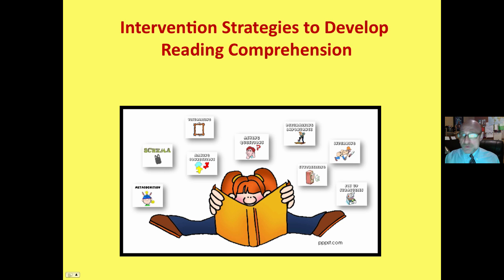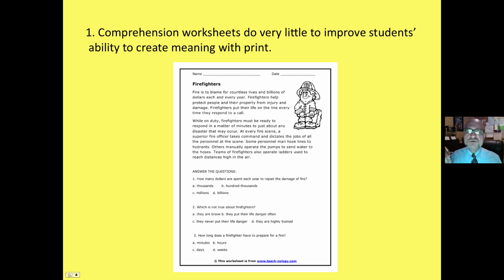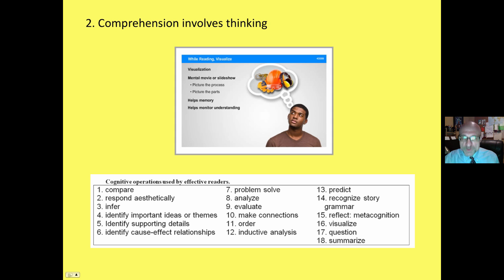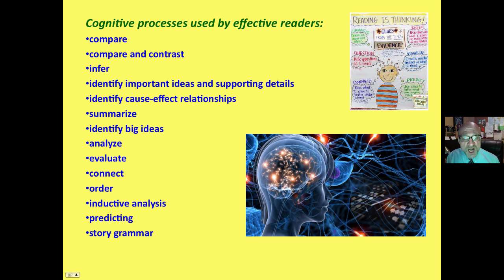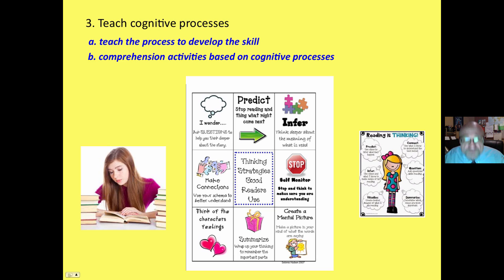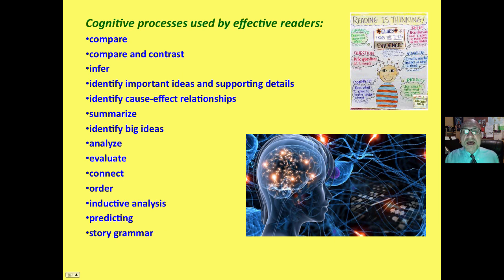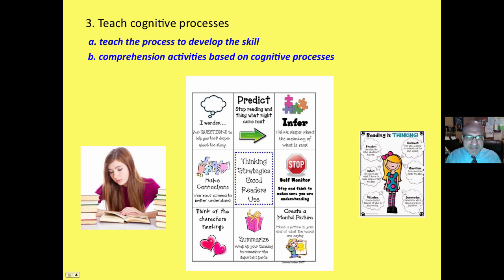Here are some examples of intervention strategies to develop reading comprehension. Know that comprehension worksheets do very little to improve students' ability to create meaning with print. Comprehension involves thinking — these are all cognitive processes used by effective readers. To improve comprehension, we teach these cognitive processes that effective readers use to create meaning with print. We teach the process to develop a skill, and all comprehension activities are based on these cognitive processes.